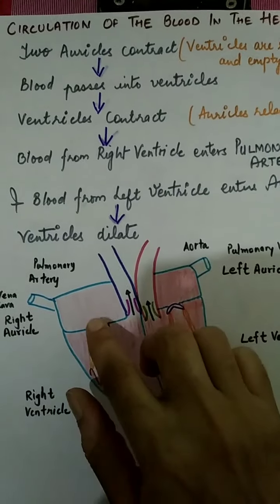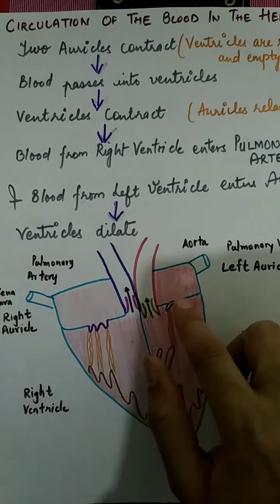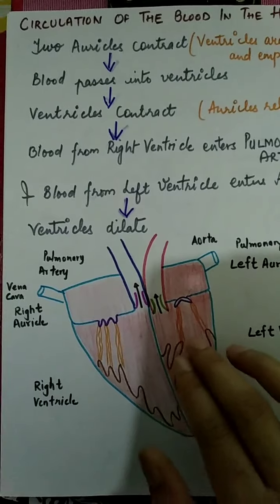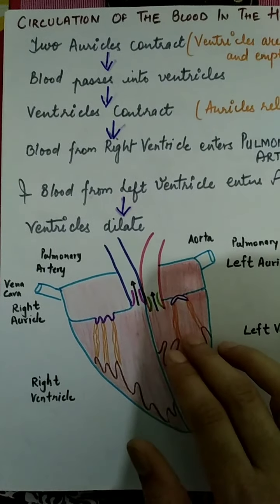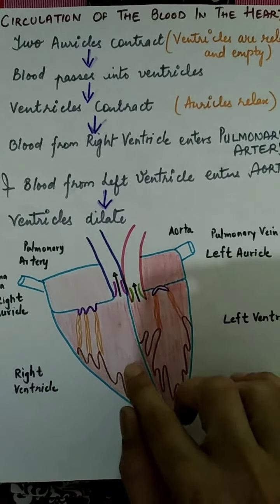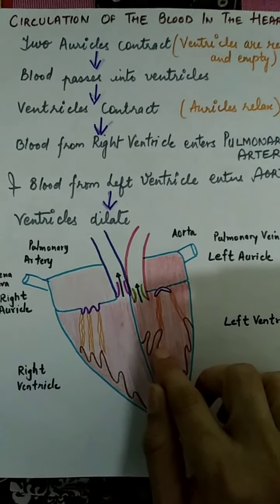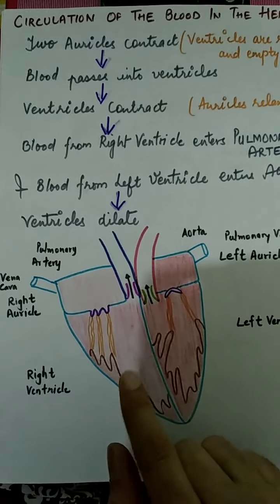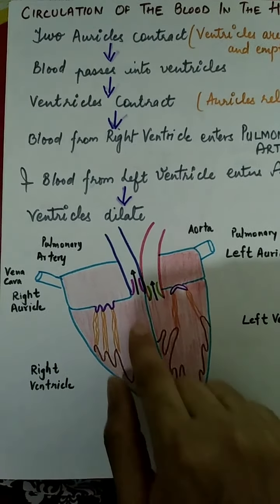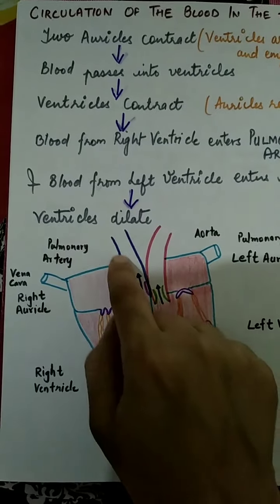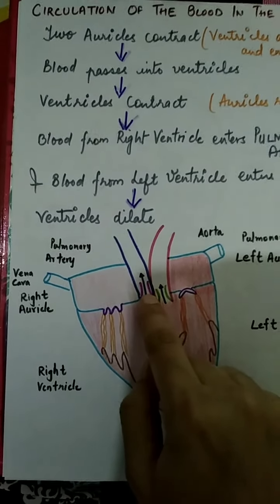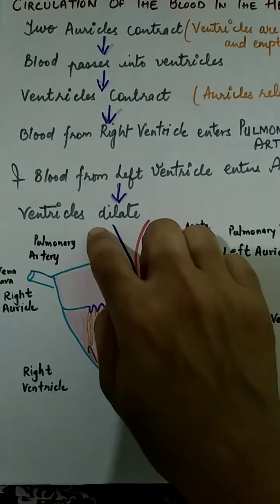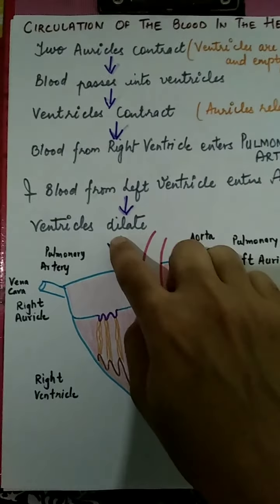After this, the bicuspid and tricuspid valves get closed. Now the blood is present in the ventricles. The ventricles will now contract. From the right ventricle, blood goes into the pulmonary artery. In this diagram, the pulmonary artery is shown going upward.